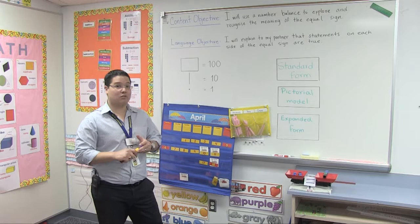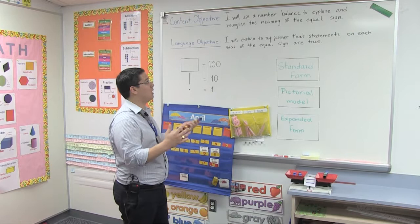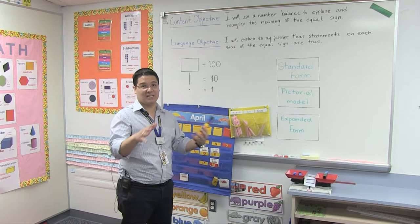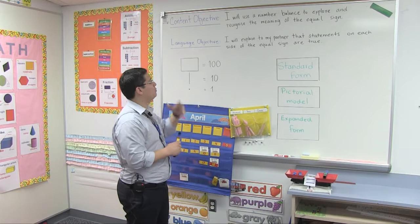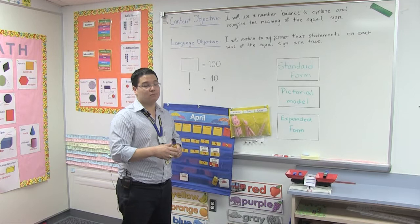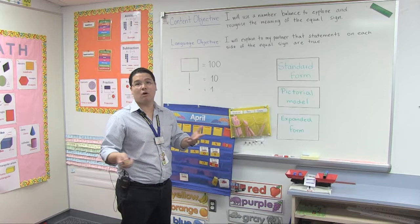Since they are bilingual kids, I'm trying to help them improve their language skills. So we also have a language objective: I will explain to my partner that statements on each side of the equal sign are true. They will discuss during centers if a number sentence is equal or not and why, obviously proving it using the number balance. I'm including that language objective because they are developing communication skills — most of them speak Spanish but are trying to speak English using complete sentences, improving not only math knowledge but also communication skills.